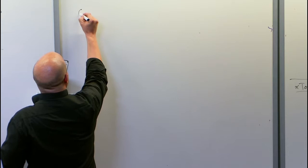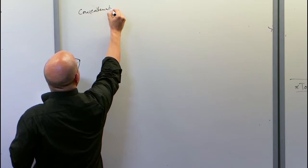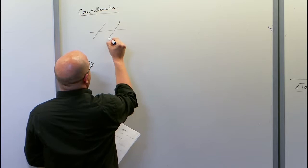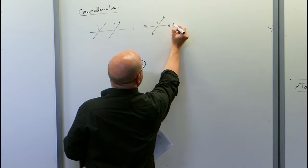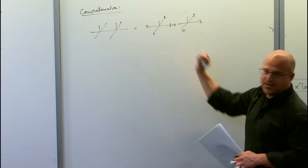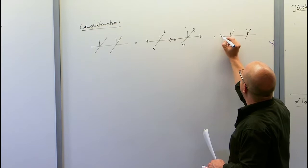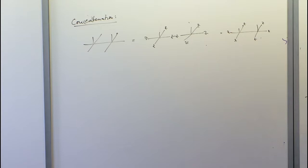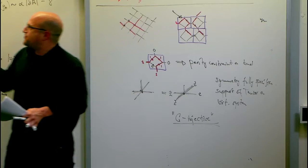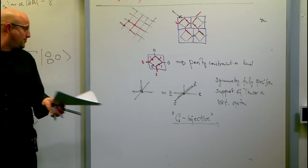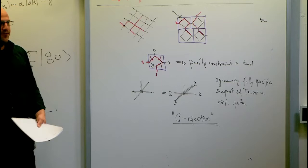An elementary and important property of this symmetry is that it concatenates nicely. If I take two tensors and concatenate them, since each tensor is invariant under the action of Z, putting Z everywhere causes the Zs at the connecting index to cancel out. So the joint tensor is also invariant. This keeps going as I grow the system. In fact, the injectivity property — that there's no additional kernel in the whole thing — also carries over. The symmetry is stable, a very important defining property.